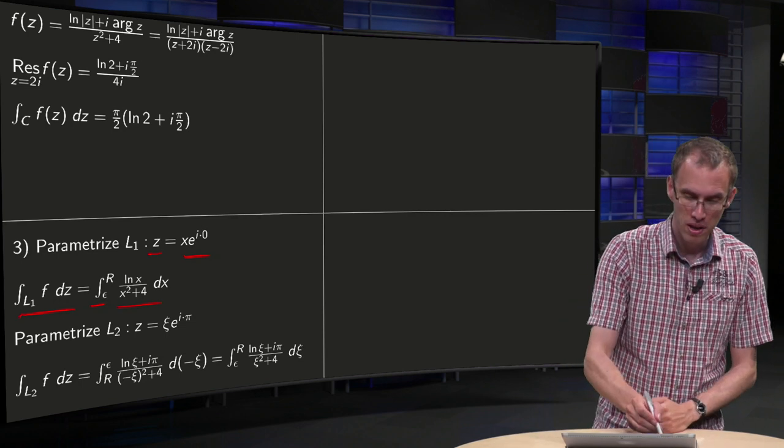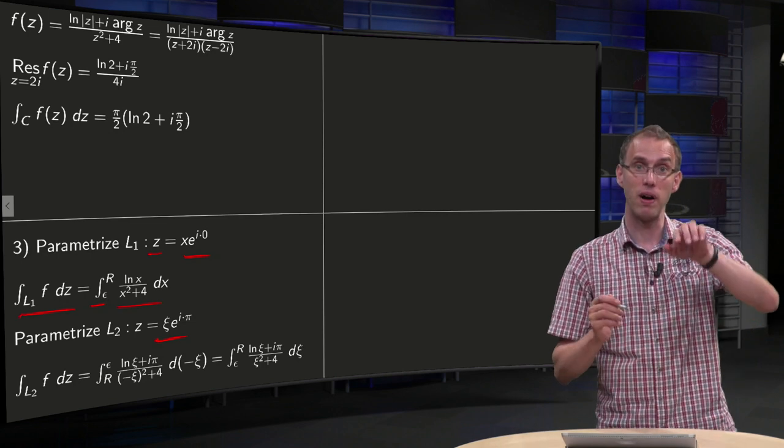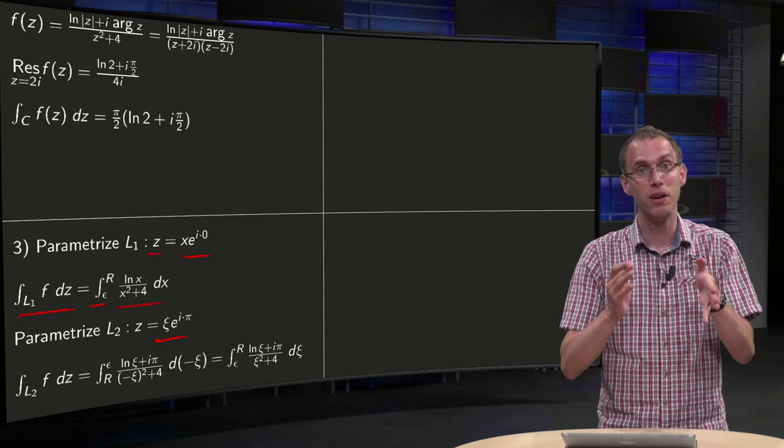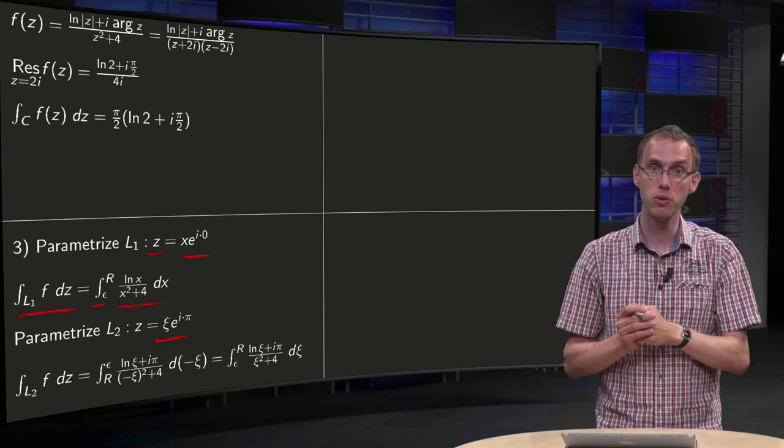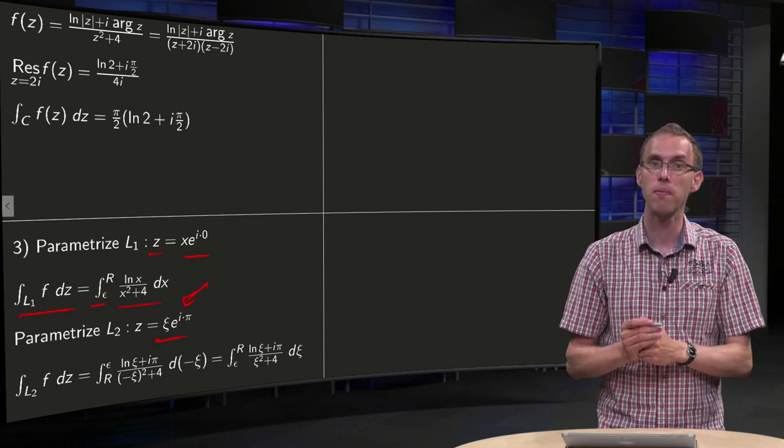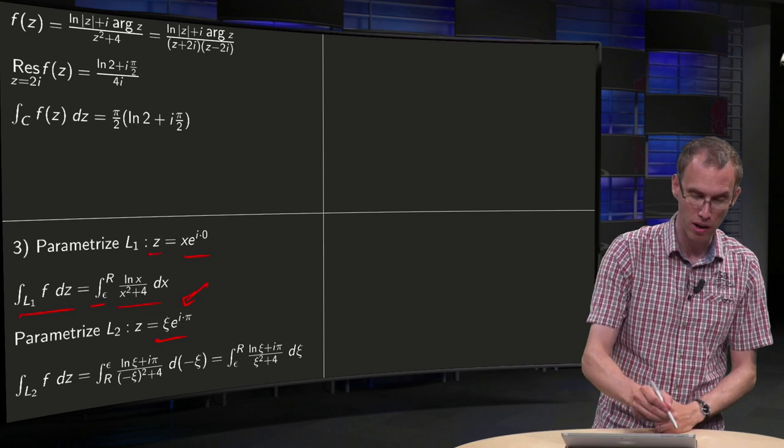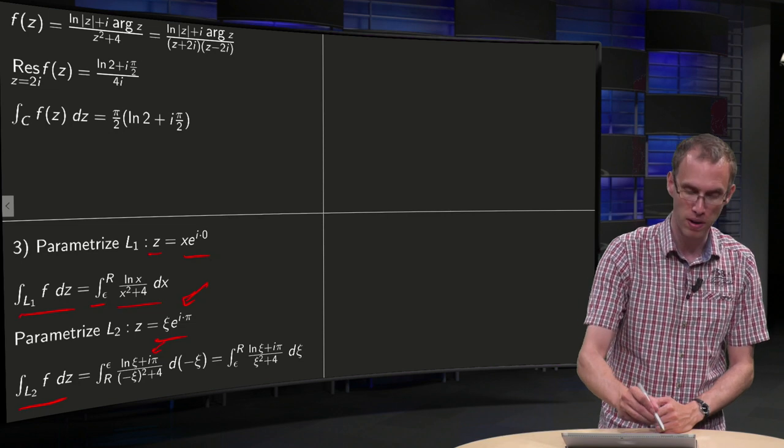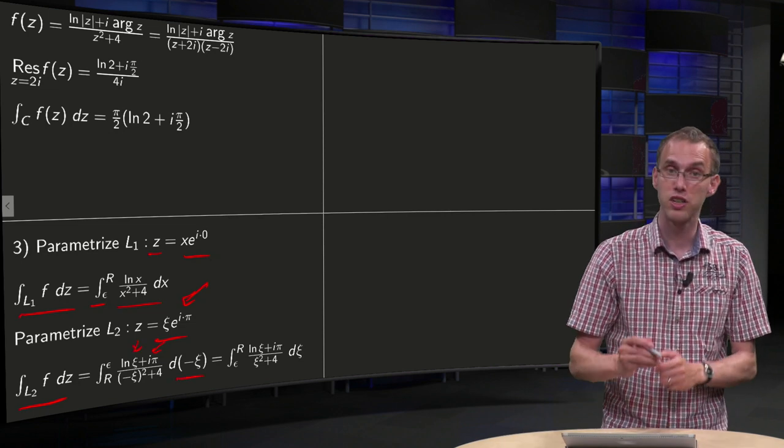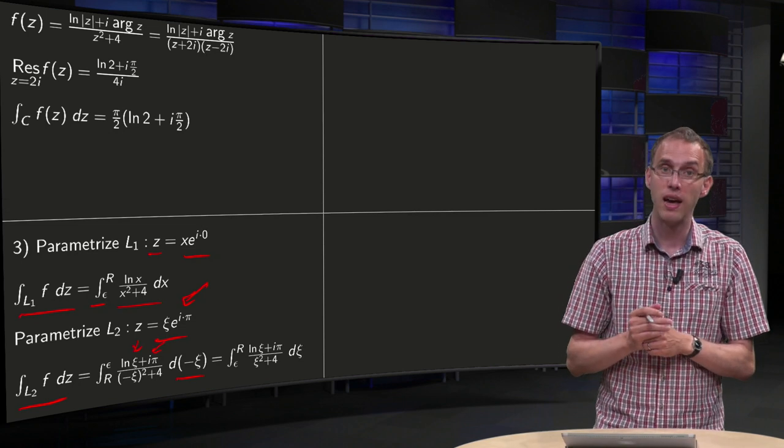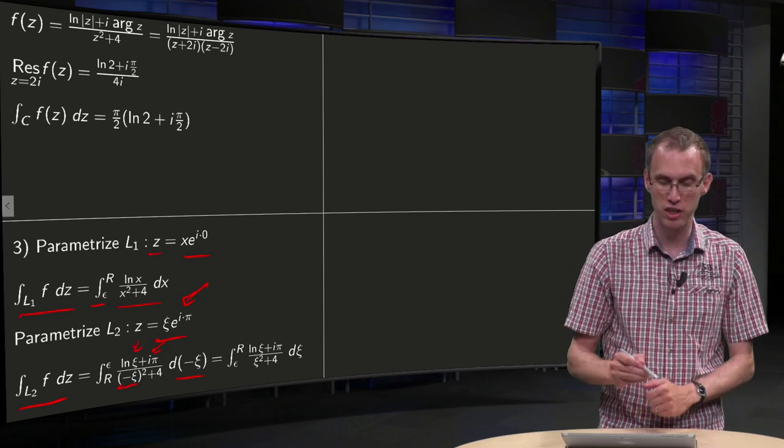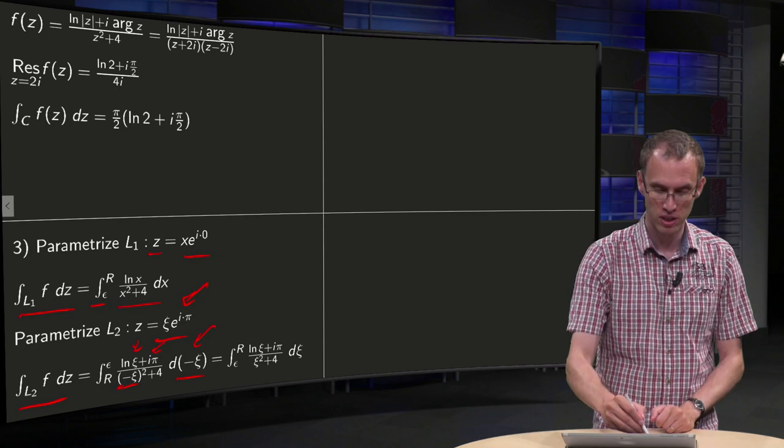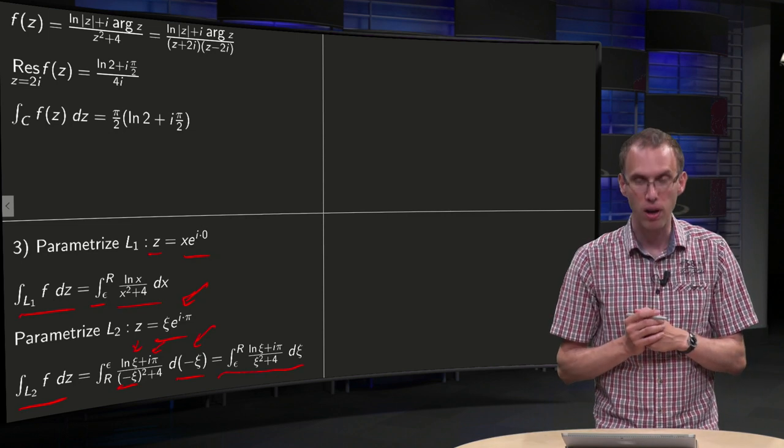Then along L2, there you have to be a bit careful. You can set z equals x times e to the power i pi, along L2 our arguments are pi, again because they have to be between minus pi over 2 and 3 pi over 2. So this will be our parameterization, and then we plug that into our integral along L2. Then we get this additional factor i times pi, and you can nicely use this minus sign over here to invert the order of the boundaries. So here we have our integral along L2.